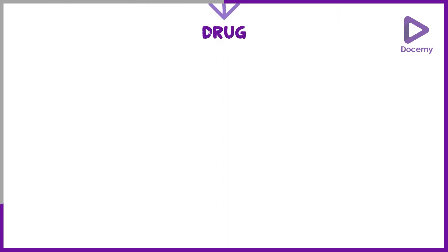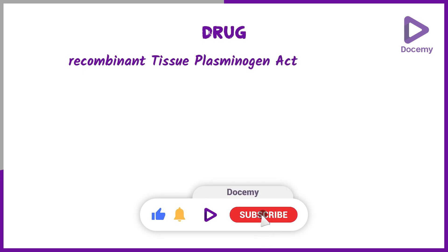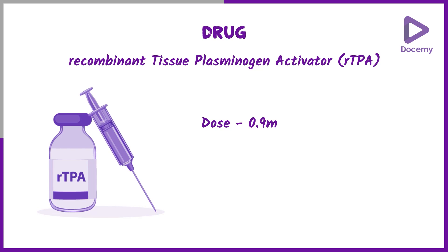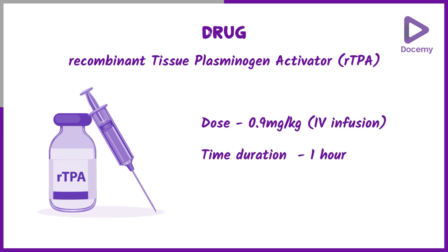The most important drug used for thrombolysis is the recombinant tissue plasminogen activator (rtPA), with a dose of 0.9 milligram per kilogram. It is given as an IV infusion over 1 hour, and this rtPA is given in normal saline.